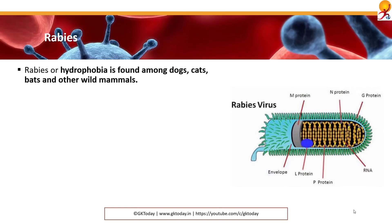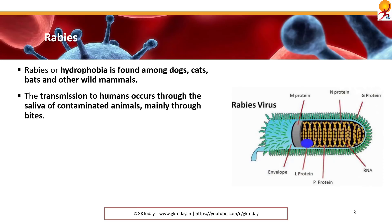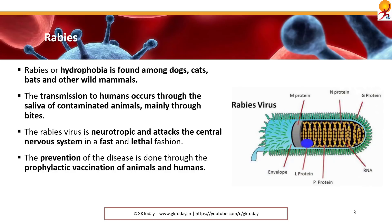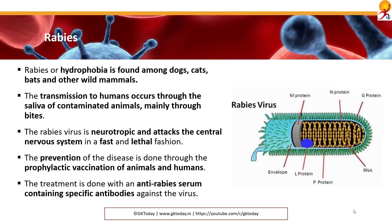Rabies, or hydrophobia, is found among dogs, cats, bats and many wild mammals. Transmission to humans occurs through the saliva of contaminated animals, usually through bites. The rabies virus is neurotropic and attacks the central nervous system in a fast and lethal fashion. Prevention of the disease is done through prophylactic vaccination of animals and humans. Treatment is done with an anti-rabies serum containing specific antibodies which fight the virus.